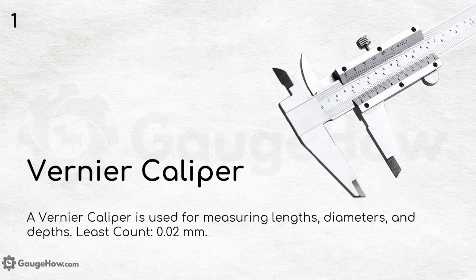Vernier caliper. A vernier caliper is used for measuring lengths, diameters and depths. The least count is 0.02 mm.